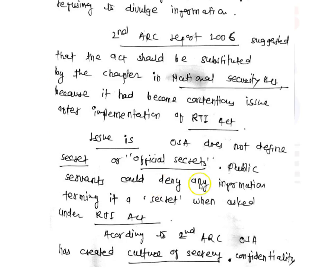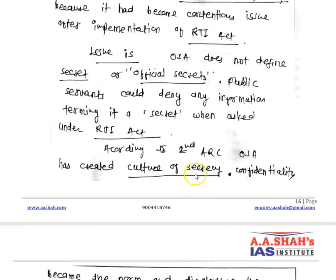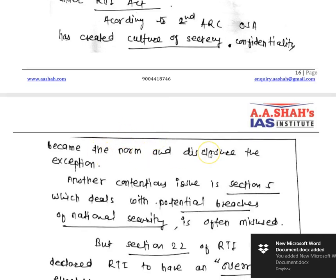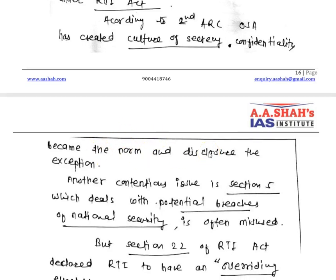The 2nd ARC agreed that the Official Secrets Act has become a contentious issue after the implementation of the RTI Act, with many contradictions. The issue with the Official Secrets Act is that it does not have a proper definition, and when something is not specifically defined, there is scope to take a broad view. Authorities can thus hide information or deny making it public, which becomes a hurdle to transparency and good governance. Public servants can deny any information calling it secret when asked under the RTI Act.